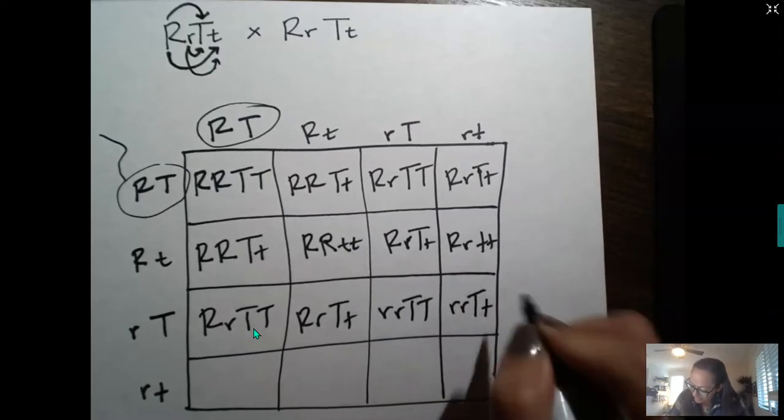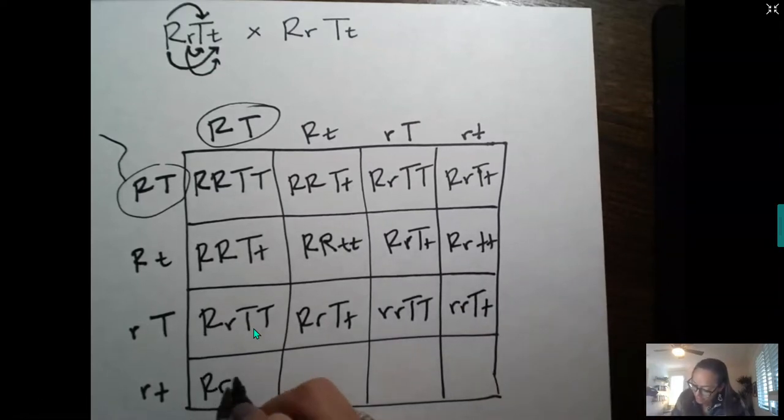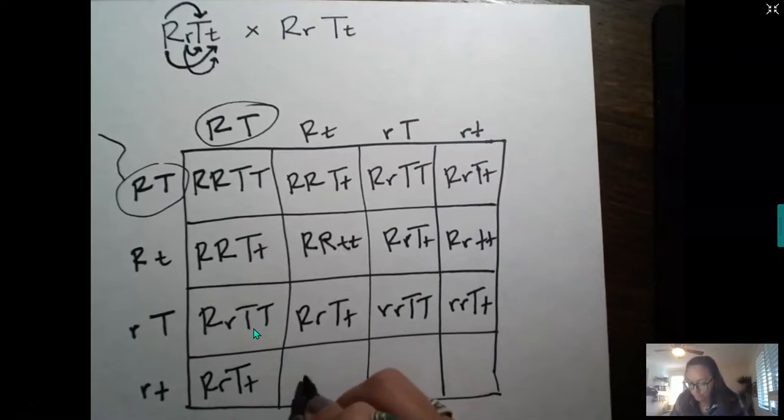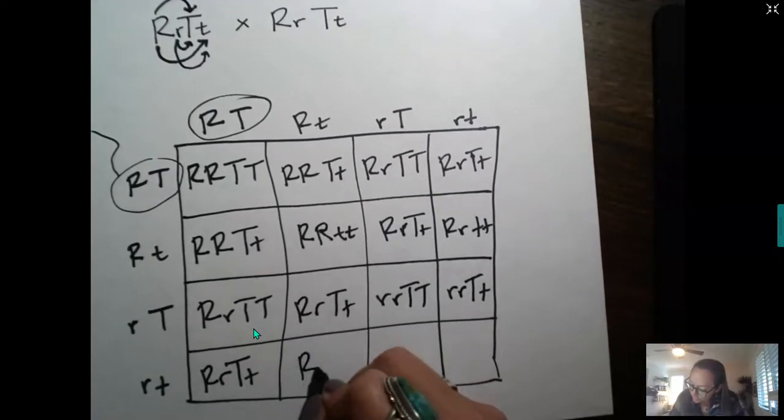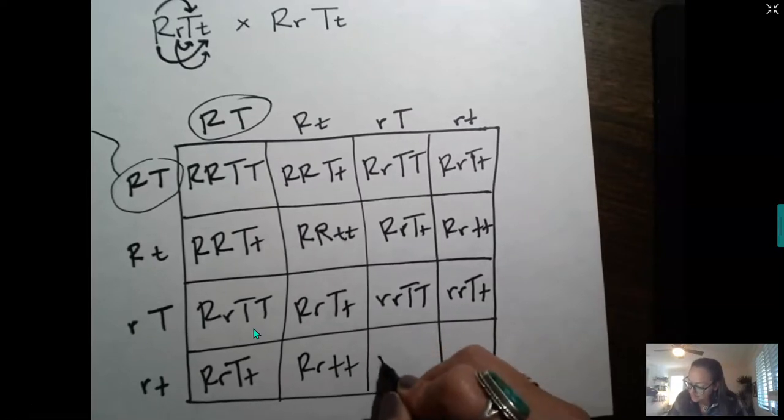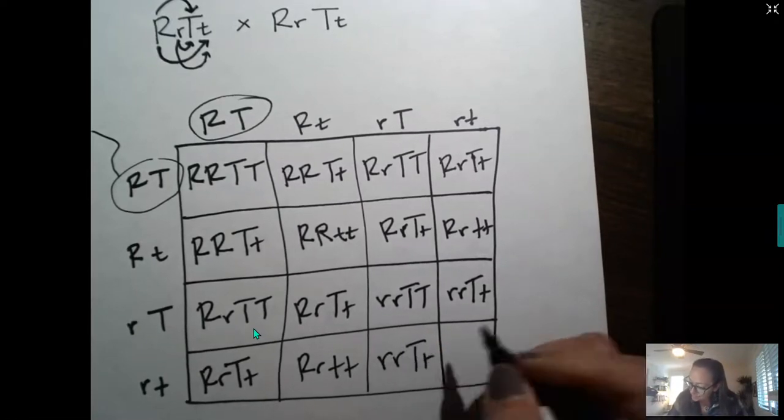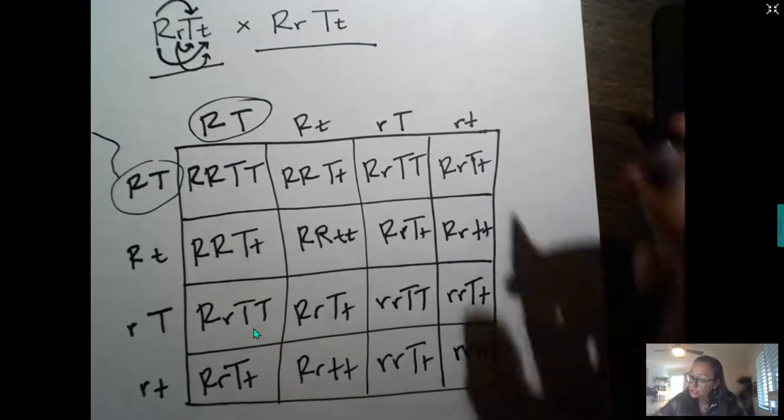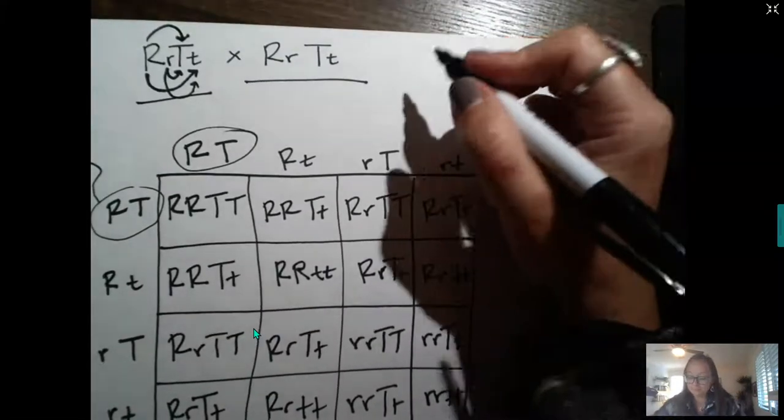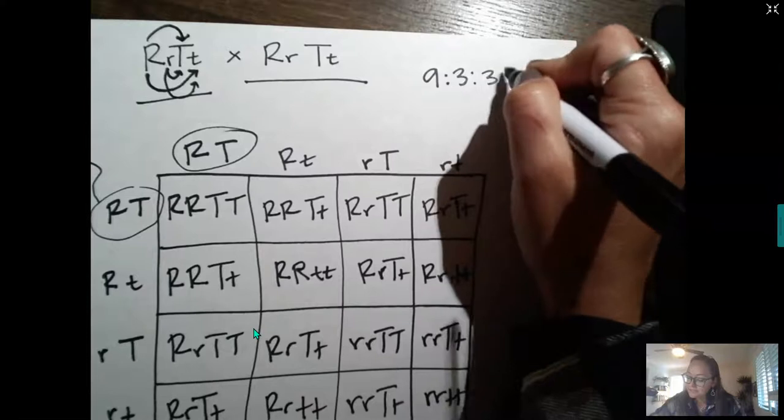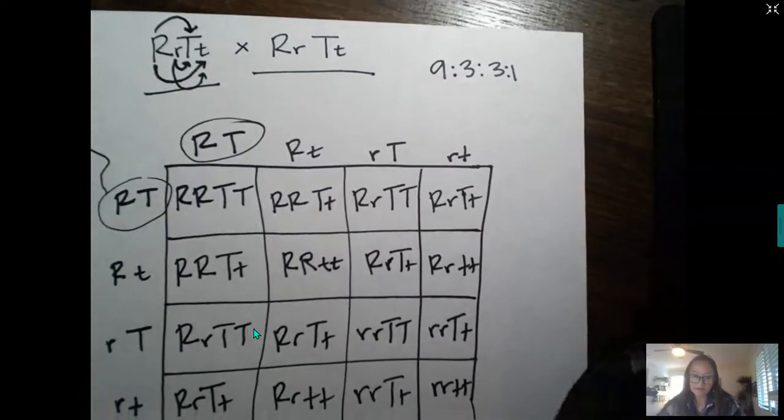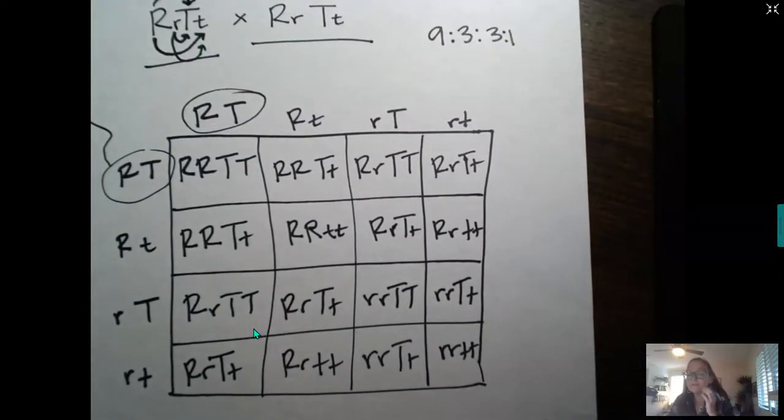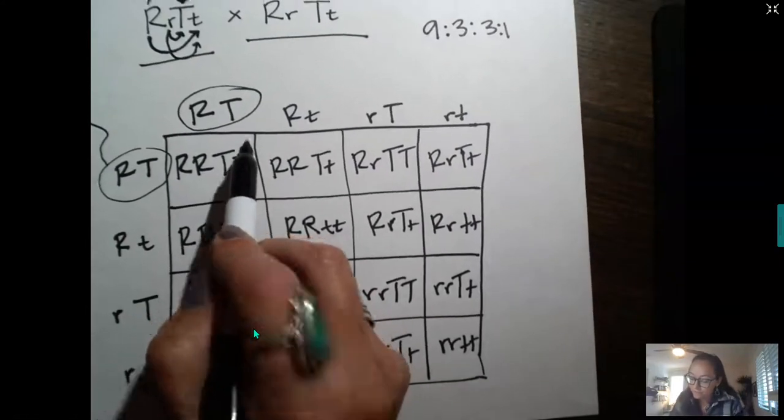So when we eventually finish our Punnett square, we can look for an expected ratio. And this will be true for all dihybrid crosses. So in a dihybrid cross, which is what we did here, dihybrid, a hybrid for both traits, we should expect a phenotypic ratio of 9 to 3 to 3 to 1 in the offspring. So let's go ahead and see. We're going to look for individuals who are dominant for both traits. So if I look for individuals who are dominant for both traits,